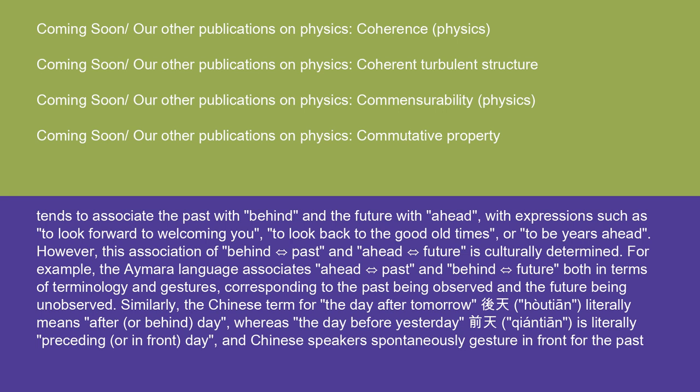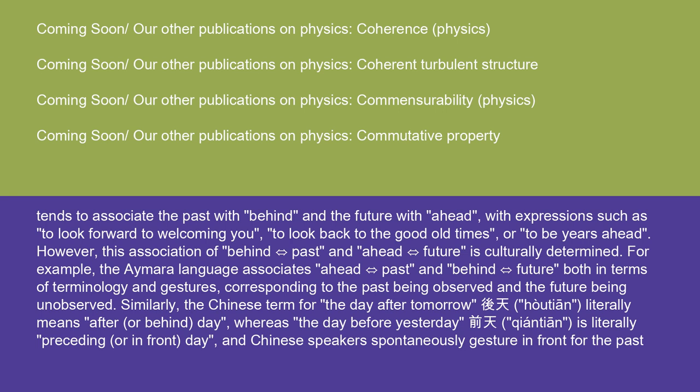Similarly, the Chinese term for the day after tomorrow literally means 'after or behind day,' whereas the day before yesterday is literally 'preceding or in front day,' and Chinese speakers spontaneously gesture in front for the past and behind for the future, although there are conflicting findings on whether they perceive the ego to be in front of or behind the past. There are no languages that place the past and future on a left-right axis, although at least English speakers associate the past with the left and the future with the right, which seems to have its origin in the left-to-right writing system.